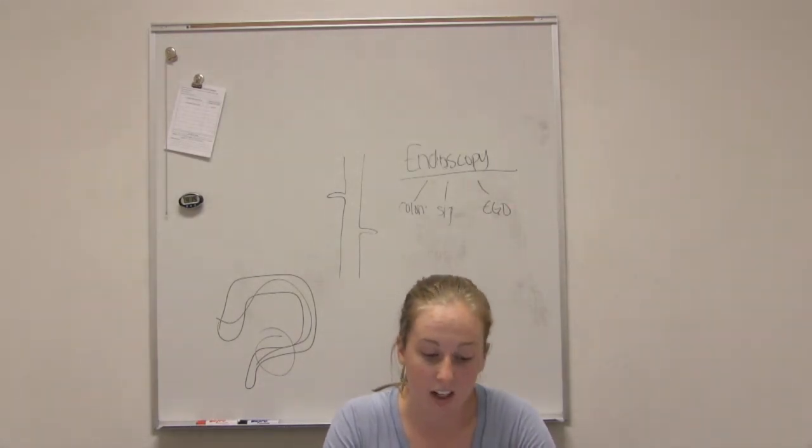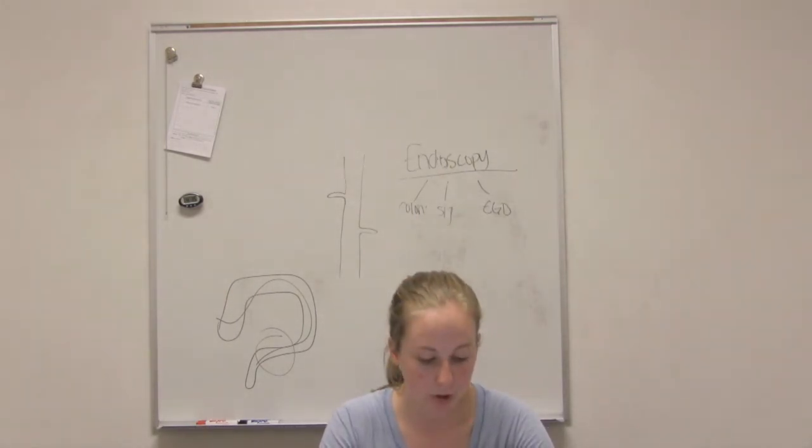Abdominal distension, anorexia, nausea, vomiting, things like that. Elevated white blood cells. Yes. Yep. So what are some things that we can do to diagnose peritonitis?